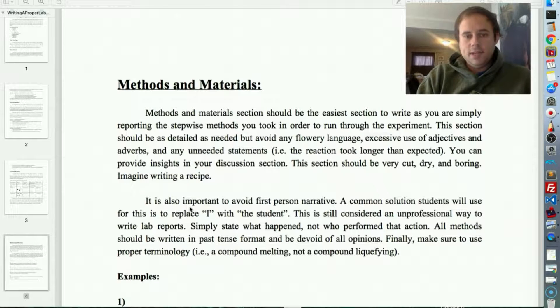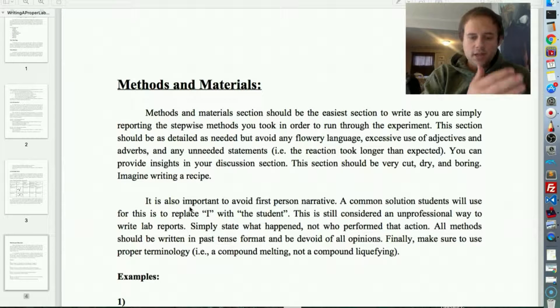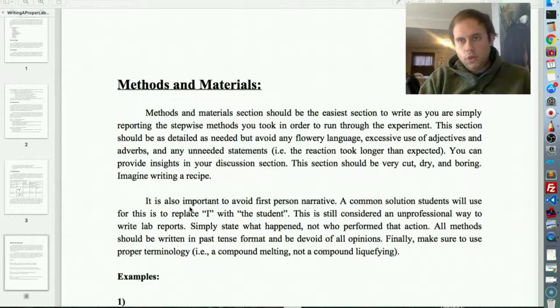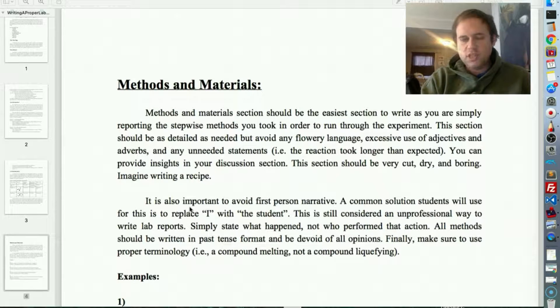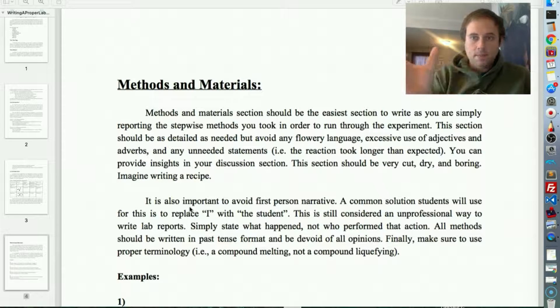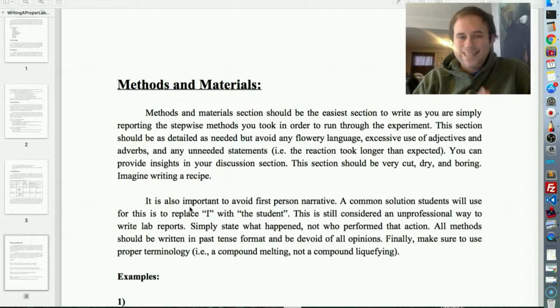So, moving on with methods and materials. The methods and materials section should be one of the easiest for you to write, because you are really just reiterating what you went through when you did your actual procedure in lab. This is also a pretty easy section to write because it doesn't have to be brand new. You're not creating the content so much as you are able to take what is in the lab book or the handout or whatever procedure you had.